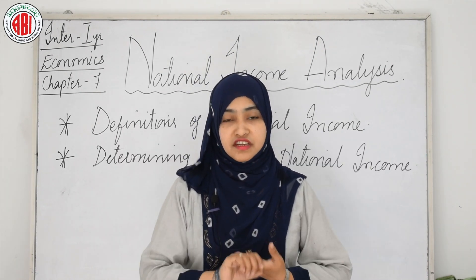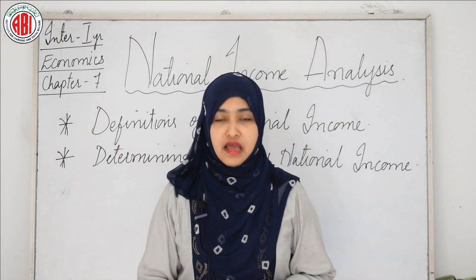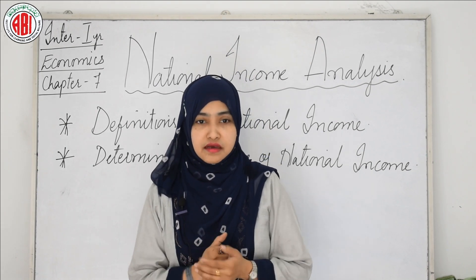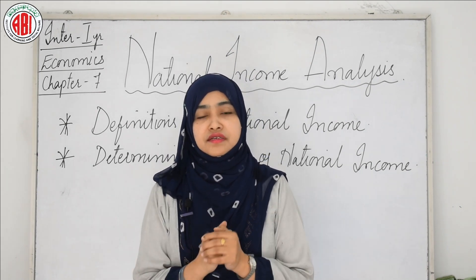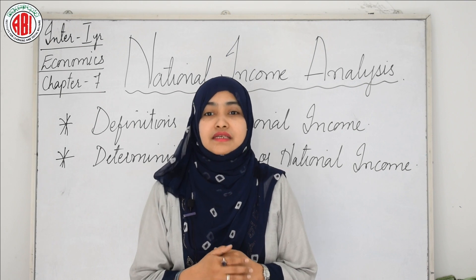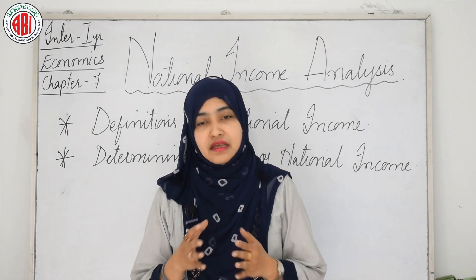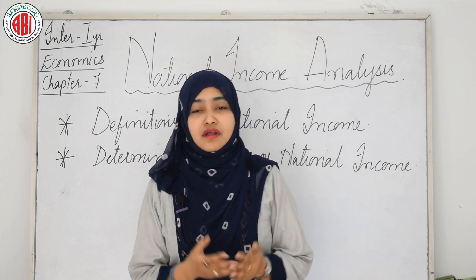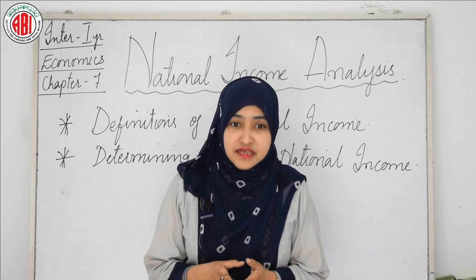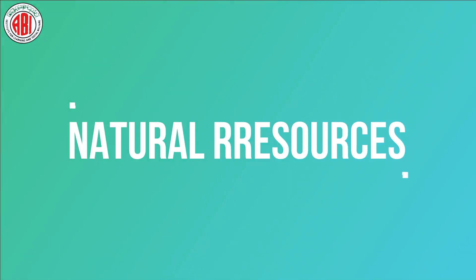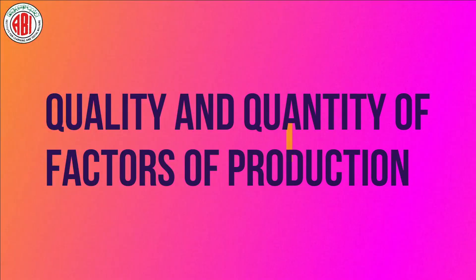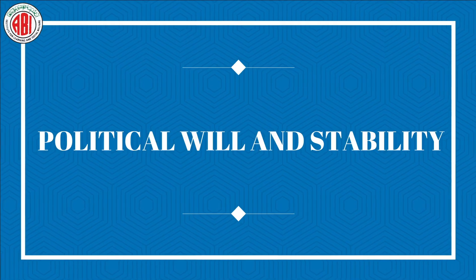After the definitions of national income, now we will see the determining factors of national income. There are many factors that influence and determine the size of national income in a country. These factors are responsible for the difference in national income of various countries, and they are natural resources, quality and quantity of factors of production, state of technology, and political will and stability.